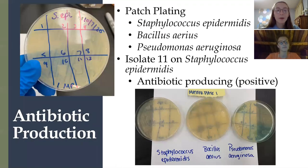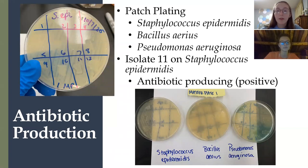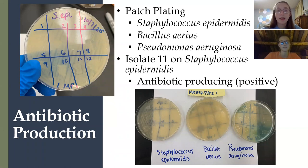The next test we completed was antibiotic production through patch plating. You take a bacterial tester strain and place it onto the agar first, then place the isolates on top. That layering effect allows the isolates to grow and produce clearings if they are antibiotic producers. We screened against three different organisms: Staphylococcus epidermidis, Bacillus aureus, and Pseudomonas aeruginosa. All three plates did have the lawn effect, as you can see in the zoomed-in top left picture.